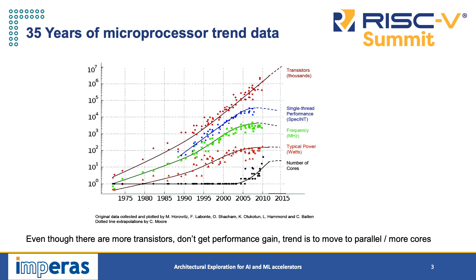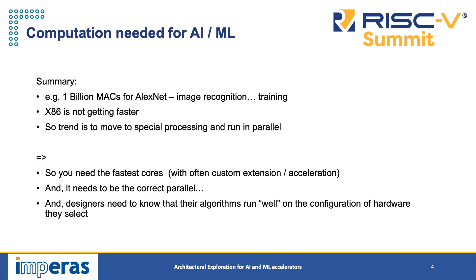That's the trend — parallel cores. The type of computation that we need is for the AlexNet, which is an image recognition algorithm, requiring a billion multiply-accumulates in the training. x86 doesn't cut it and the trend is towards special processing, so you need faster cores often with custom extensions and acceleration. You need to know that your algorithm is going to run well on the configuration of hardware that you select.